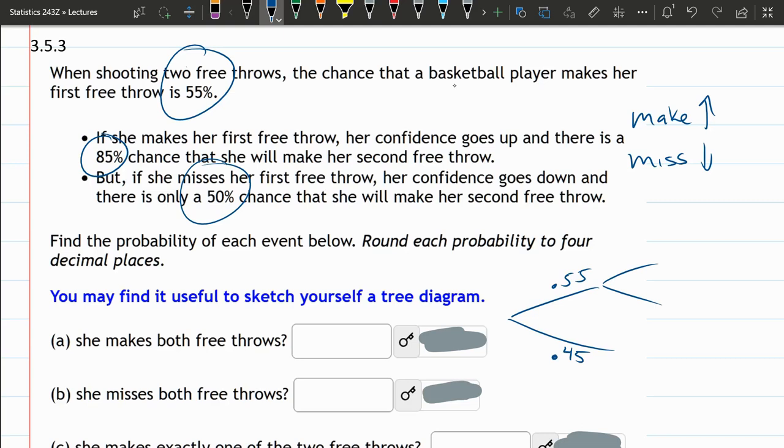Now, if she takes a second free throw, these numbers are different. If she makes her first free throw, she has an 85%, or .85, chance of making her second. The chance of missing is the opposite of .85, which is 1 minus .85, or .15.